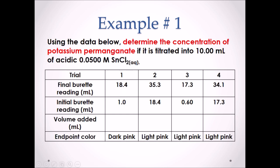We have to find the volume added in each trial by taking the final volume minus the initial volume. As shown here, we can see the volume added per trial. Note how trial number 1 does not fit within the 0.2 mL range. So we will disregard trial number 1.